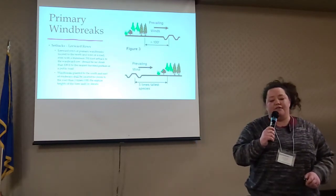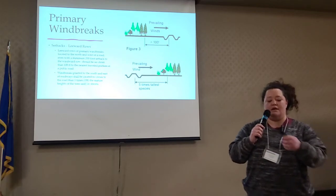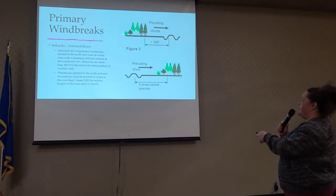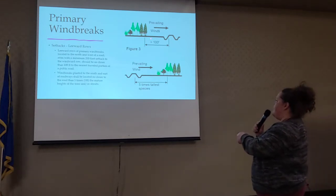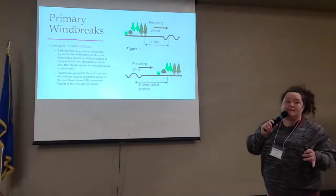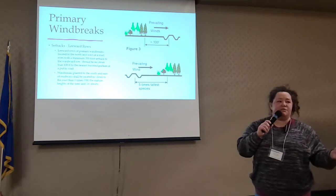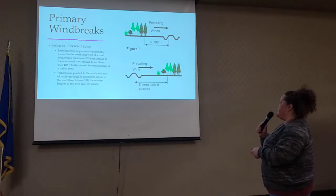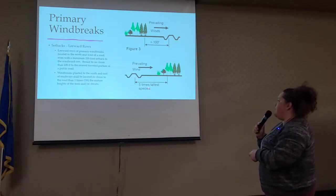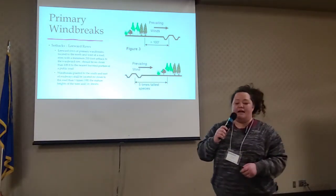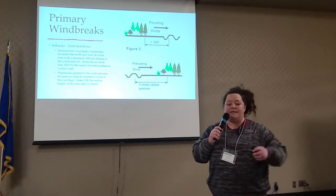On the leeward side, we're looking at 100 feet. In this little diagram up here — 100 feet on that prevailing winds side, this would be your windward side, this would be your leeward side — and you're wanting to make sure you're no closer than 100 feet from that road. On the south and east side, it varies a little bit. On a general rule of thumb, stick to 100 feet. You don't want to be any closer than 100 feet to the road or any area you're trying to protect, but you can also go by five times the tallest height of your tallest species. So if you've got a cottonwood in there, that might change where your spacings are going to be.